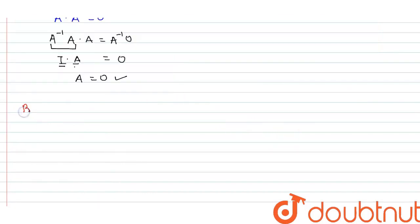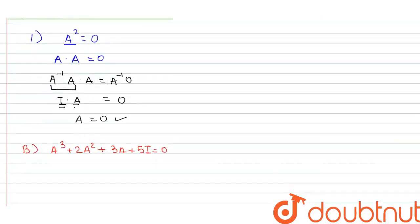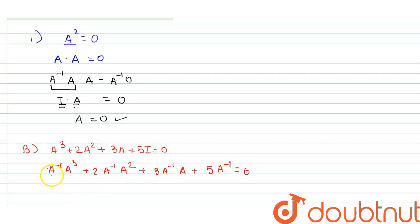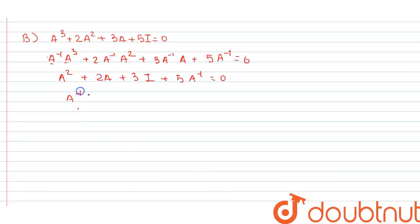Now statement B: A³ + 2A² + 3A + 5I equals zero, that is the null matrix. Then A is invertible. We multiply A inverse on both sides: A inverse into A³ plus twice A inverse into A² plus thrice A inverse into A plus 5 times A inverse into I equals zero. This simplifies to A² + 2A + 3I + 5·A inverse equals zero. So A inverse equals minus one-fifth of (A² + 2A + 3I). Therefore A inverse exists.